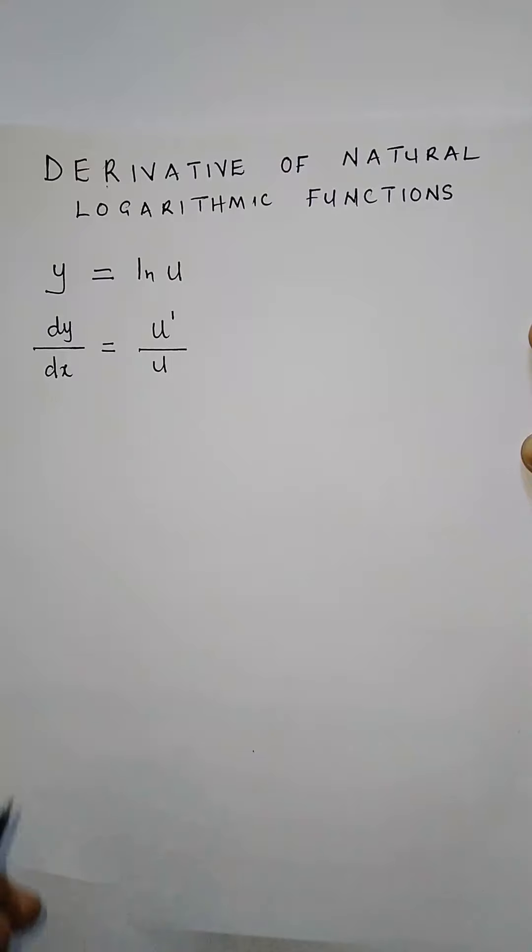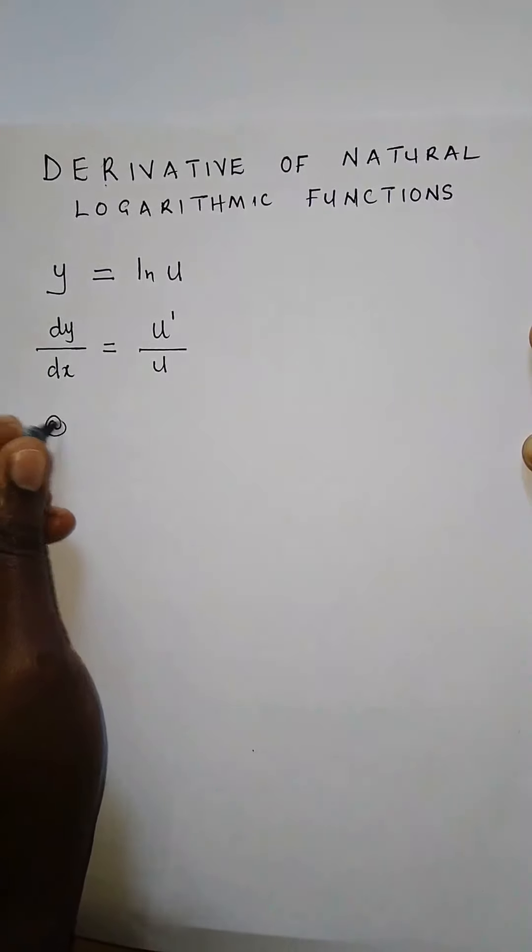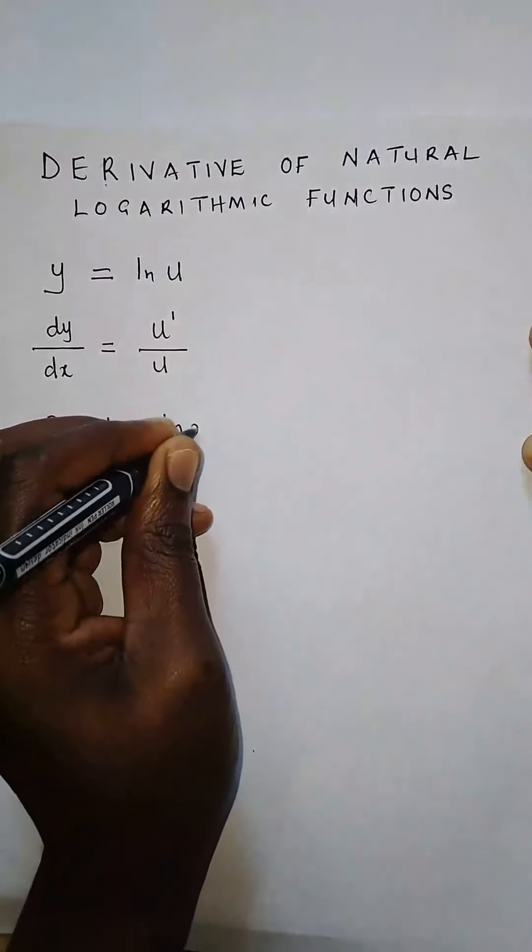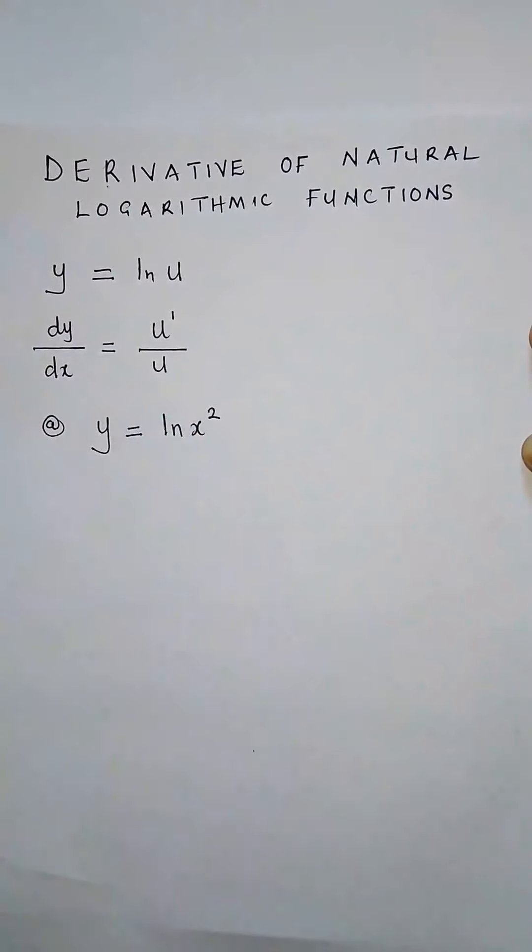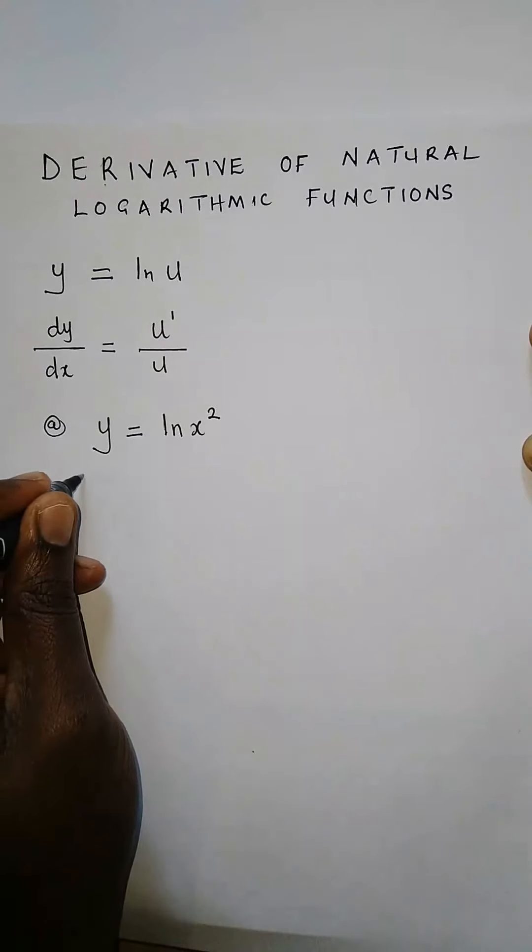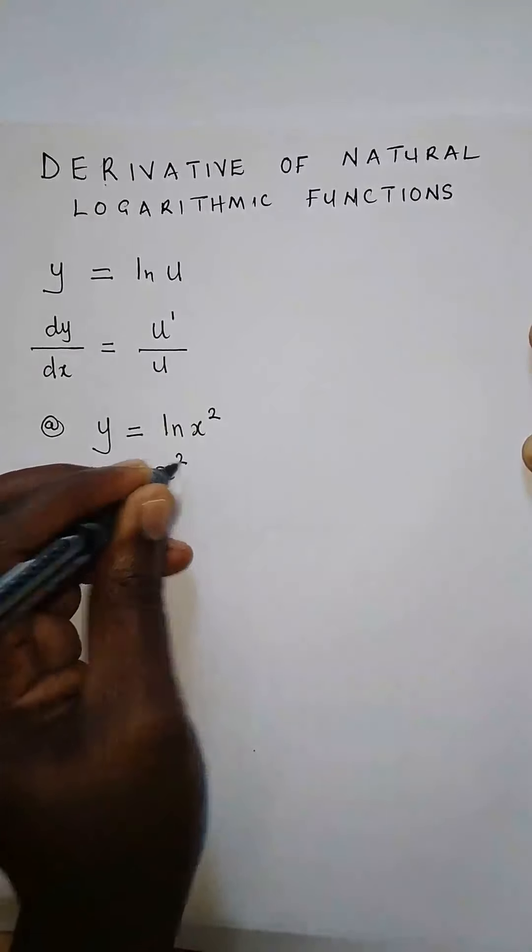Let's take this example. We have y equals ln x squared. So how do we find dy/dx? What we're going to do first is identify our u. Our u is x squared.